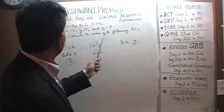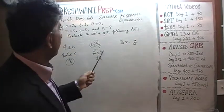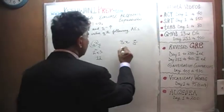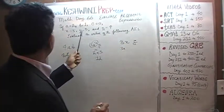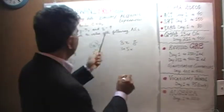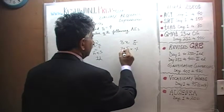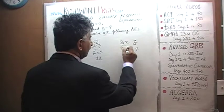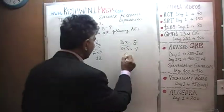Now 3xz. These are so simple you can do them mentally. 3 times x which is 5, times z which is 4. 3 times 5 is 15, and 15 times 4 is 60.